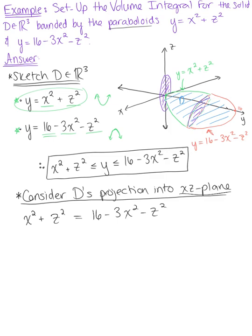Simplifying by bringing all variables to one side: 4x squared plus 2z squared equals 16. Dividing both sides by 2, we get 2x squared plus z squared equals 8. This is an ellipse centered at the origin.